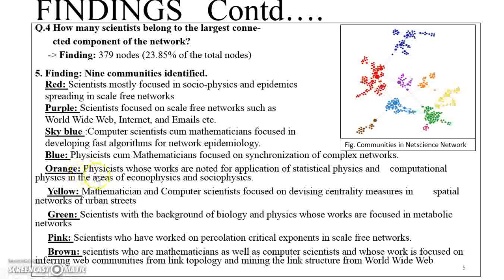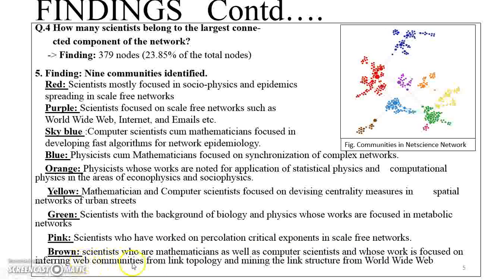The orange community consists of physicists noted for the application of statistical physics and computational physics in econophysics and social physics. The yellow community consists of mathematicians and computer scientists focused on devising centrality measures and spatial networks of urban streets. The green community consists of scientists with backgrounds in biology and physics whose works focus on metabolic networks. The pink community consists of scientists who have worked on percolation critical exponents in scale-free networks. Finally, the brown community consists of mathematicians and computer scientists whose work focuses on inferring web communities from link topology and mining link structure from the worldwide web.